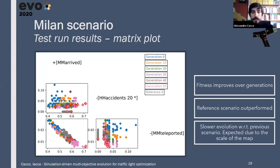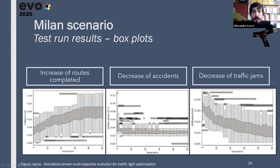So, these are another run on the Milan scenario. The results are similar. We observed an improvement over the generations, but in this case, the reference scenario is even outperformed by the last 10 generations. The evolution was a bit slower, but it was expected due to the scale of the map. Here you can see the same box plot as before. The variance could use some more improvement, maybe with some more generations, but we see that the results are anyway quite good.